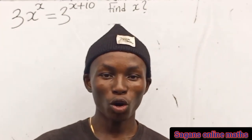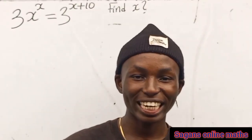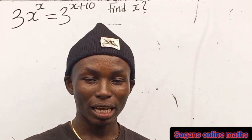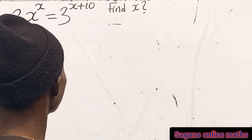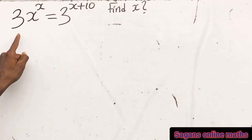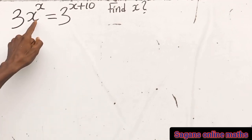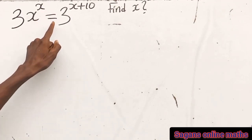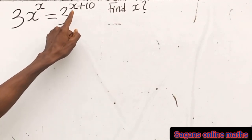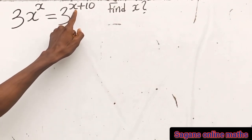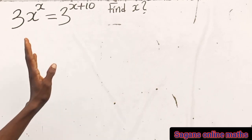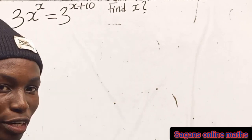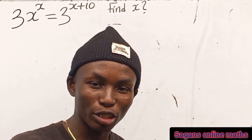Hello everyone, welcome once again to Cyga's online math class. Let's solve this question together. We're doing 3 multiplied by s to the power of s equals 3 raised to the power of s plus 10. We are asked to find the value of s. This question is very simple to solve.